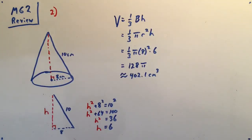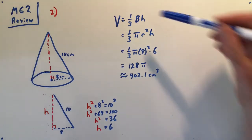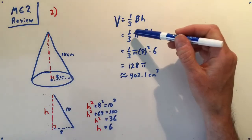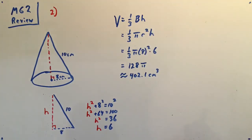In problem number two they're asking us to find the volume of a cone with a radius 8 and a slant height of 10. Our formula for volume of a cone is one-third base area times height, and with anything round, in this case the circular base, there is going to be pi r squared.